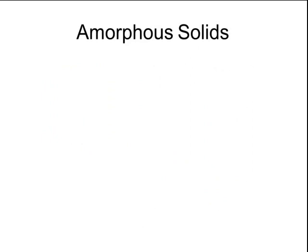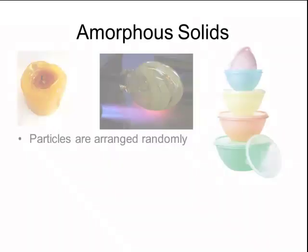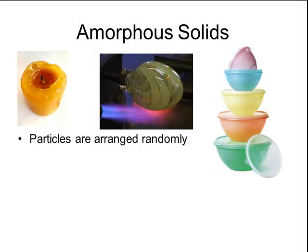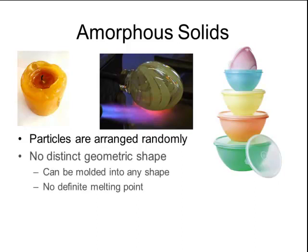The other type of solid is called an amorphous solid. Unlike the particles of a crystal, where the order has a very predictable repeating pattern, the particles of an amorphous solid are arranged randomly. Amorphous solids include things like wax, glass, and plastics. All of these substances have no distinct geometric shape, and you can mold them into any shape that you want. Because they don't have a distinct three-dimensional shape, they have no definite melting point, and so amorphous solids will actually melt over a wider range of temperatures than a crystalline solid.